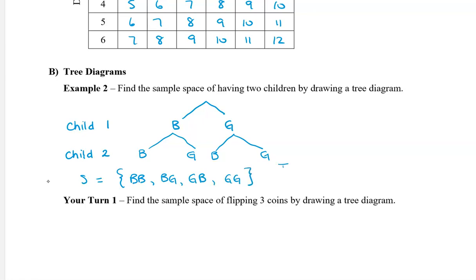So in this example, there are four possible outcomes.